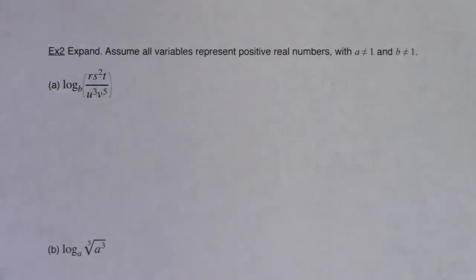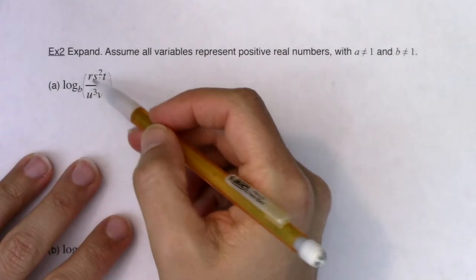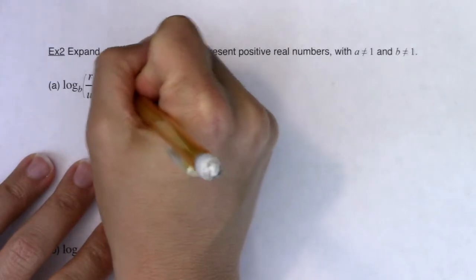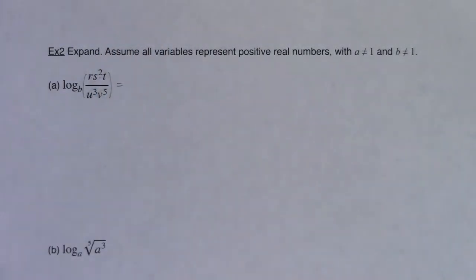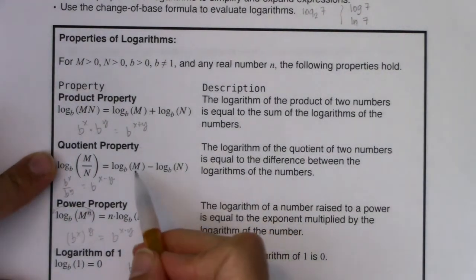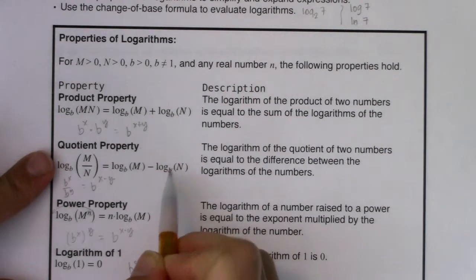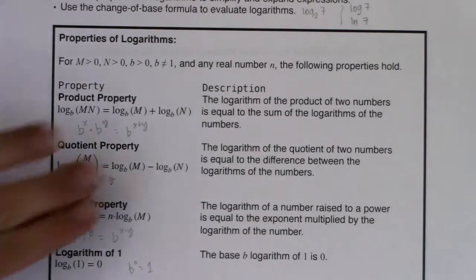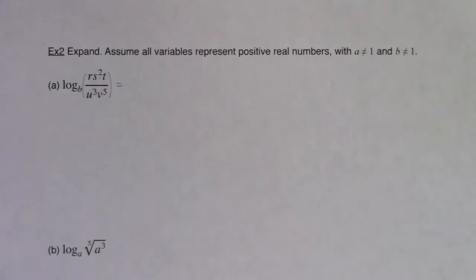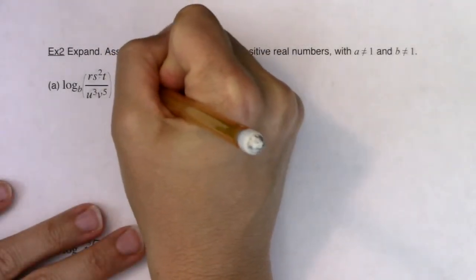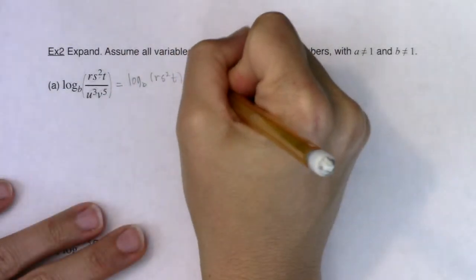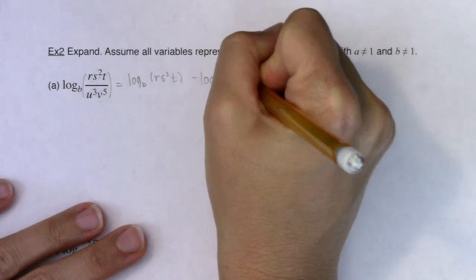First and foremost, I have a quotient — a numerator and a denominator. So I'm going to use the quotient rule before I do anything here. The quotient property says that when you have the logarithm of a quotient, you do the log of the numerator minus the logarithm of the denominator. When I move this way along that equation, I'm expanding — going from one logarithm to two logarithms. So let's expand. This will give me log base b of r s squared t minus log base b of u cubed v to the fifth.